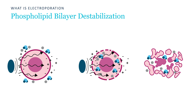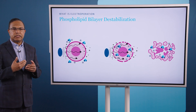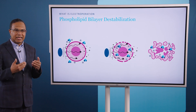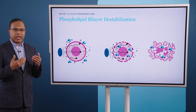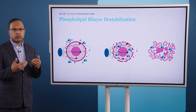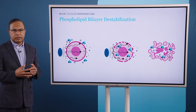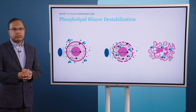Once those pores open up, that creates cellular disruption and changes in cellular function, which then leads to a cascade of events which end in programmed cell death, otherwise known as apoptosis.